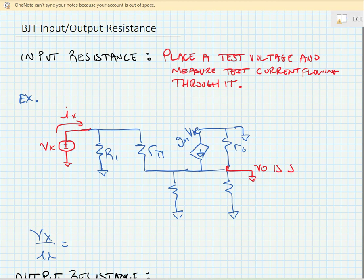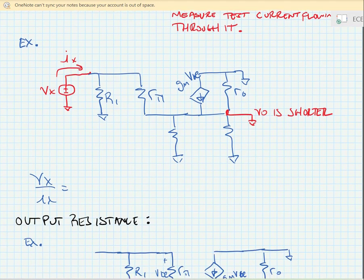Here we can see that Vx over Ix is simply equal to Rpi, if I want it to be Rpi.